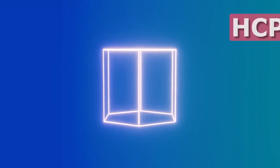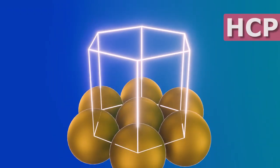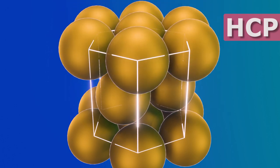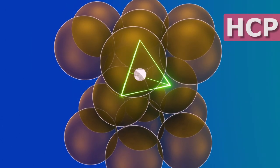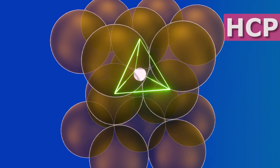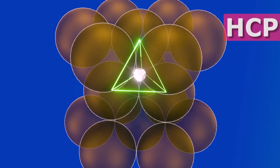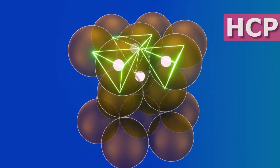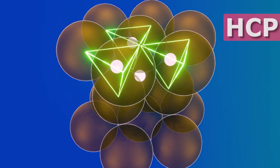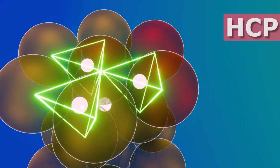In hexagonal close packing comprising the bottom, middle, and top layers, a tetrahedral void is located between three atoms of the middle layer and one central atom of the top layer. Three more tetrahedral voids are located between one atom of the middle layer and three from the top.